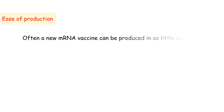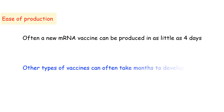This challenge highlights how mRNA vaccines are at an advantage over other types of vaccination. One of the greatest benefits of mRNA vaccines is the ease of production — often a new mRNA vaccine can be produced in as little as four days, while other types of vaccines can often take months to develop. This allows for much more rapid development of a vaccine that stimulates B cells and a booster shot to stimulate T-cells.